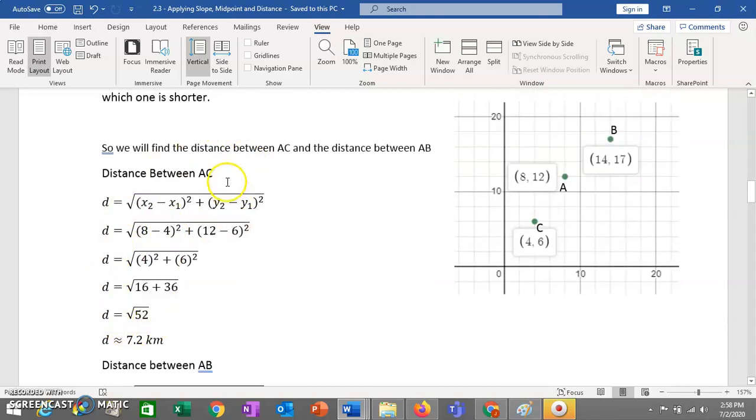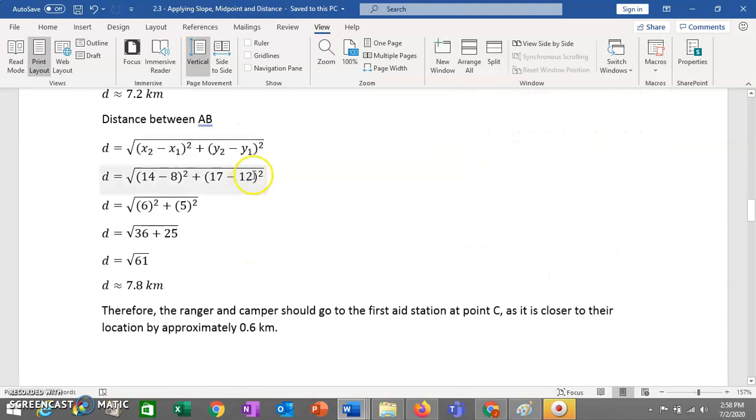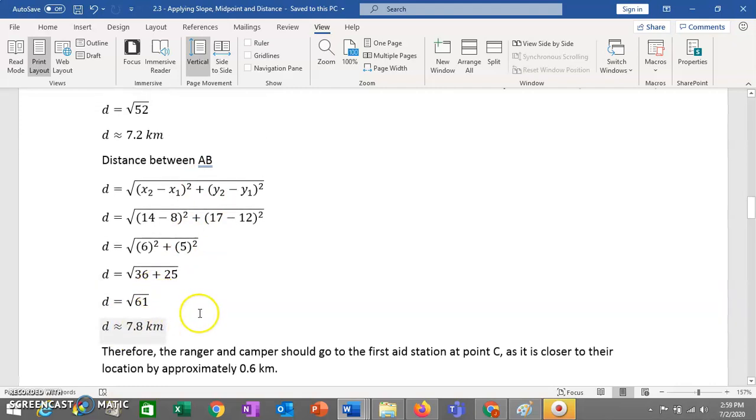So it's approximately 7.2 kilometers. The square root of 52 is not exactly 7.2. We have to round it because it's an irrational number. We then calculate the distance between A and B. And we find that that distance is slightly longer. So then we can conclude that, therefore, the ranger and the camper should go to the first aid station at point C, as it is closer to their location by approximately 0.6 kilometers. So that's 600 meters less traveling.